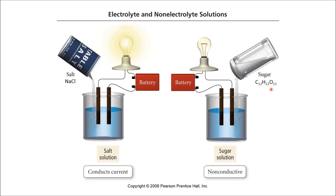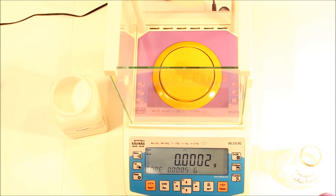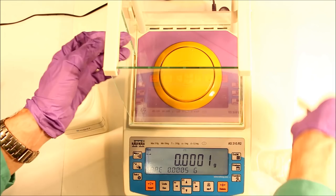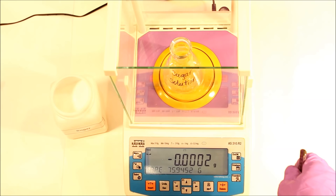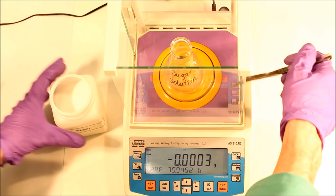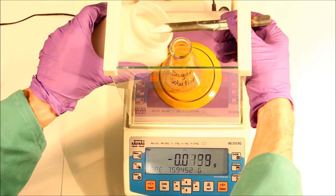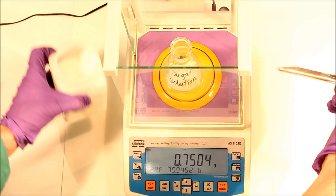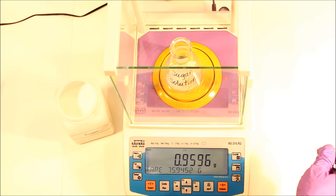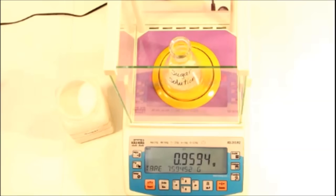To determine the conductivity of the solutions, we first need to make them. To make the sugar water solution, take a labeled Erlenmeyer flask and place it on the balance. Close the doors and press the tare button to zero the balance. Then add the solute — use your left hand to hold the sugar and your right hand to hold the spatula — and add approximately one gram of sugar to the flask. Close the balance doors and record the exact mass displayed. The mass won't be exactly one gram, so record the actual mass in your laboratory notebook.